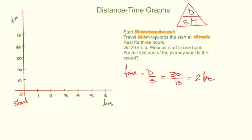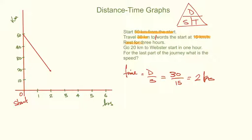Now that we know it takes two hours and we're only traveling 30 kilometers down, stopping on 20, I'll put a little point there and draw the line going down. Then they said we need to rest for three hours — that's a pretty long rest. So if we're now on two hours, three hours later brings us to five hours. We draw that in as a horizontal line all the way to five hours.